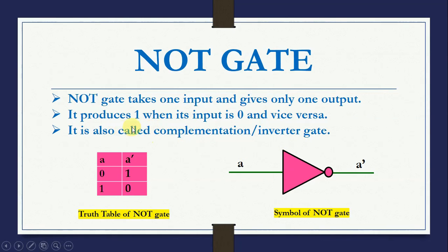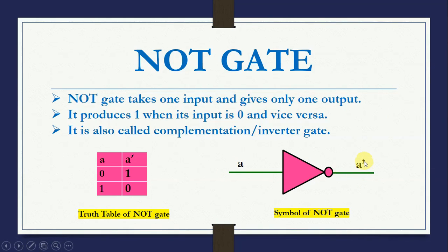NOT gate is also called complementation or inverter gate. For a single boolean variable A, it can have two values: 0 or 1. If the value is 0, NOT gate gives 1; if the value is 1, it gives 0. The symbol of NOT gate takes one input and produces one output — if the input is A, the output is A dash or A bar.